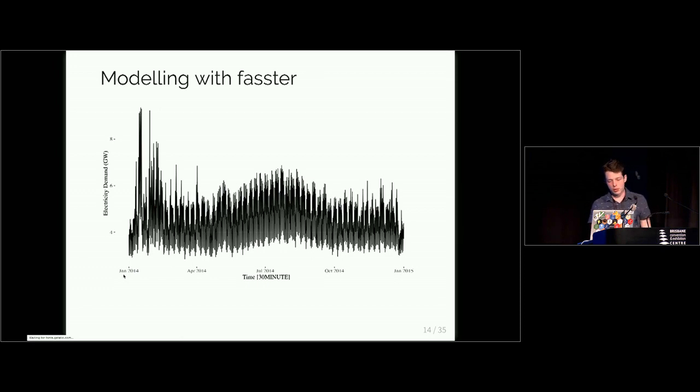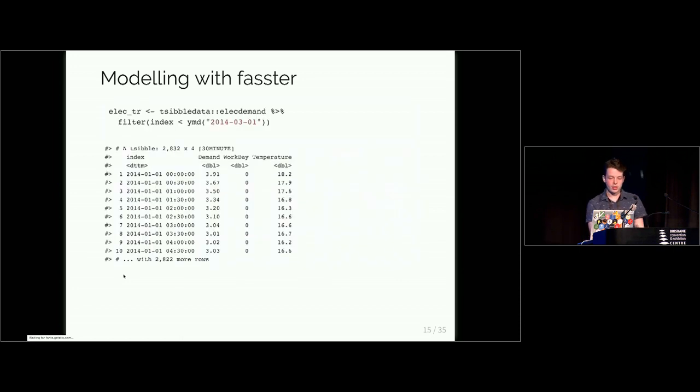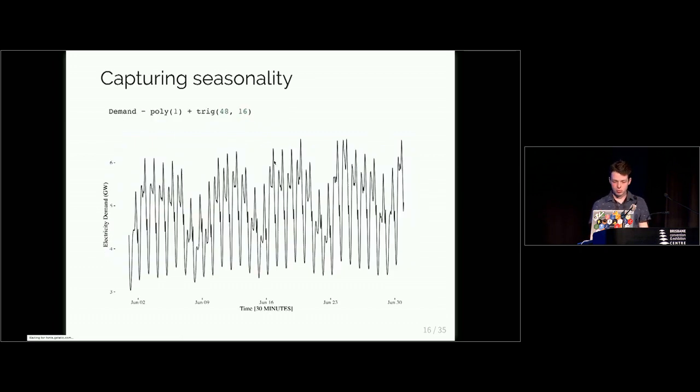Let's go back to the example, the electricity demand. This is a useful example because it captures three different ways that we can capture the three different seasonalities presented in this data. Here's the data itself. So we have demand information, that's the one we want to predict. We have a workday indicator for if it's a working day and not a working day. We'll be using that to switch. And we have the exogenous regressor information temperature.